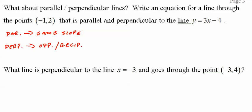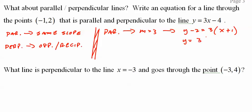My equation for a line through the point negative 1, 2, parallel and perpendicular to the line. Parallel first: m still equals 3. Y minus 2 equals 3 times x plus 1. Y equals 3 times x plus 1 plus 2.